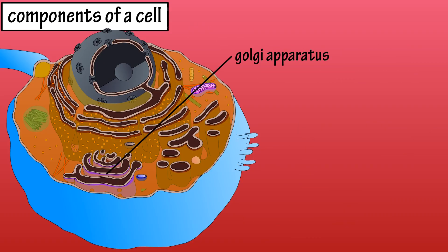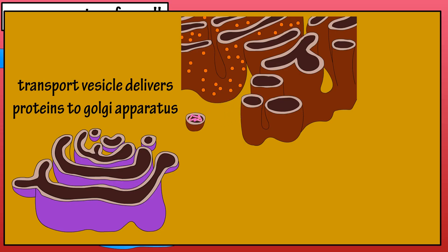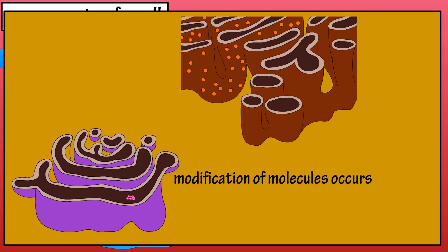The Golgi apparatus is a membranous organelle whose main function is to modify, package, and store proteins. Transport vesicles delivering proteins from the ER fuse with the first cistern of the Golgi apparatus, where they release the proteins, which are modified by enzymes. Modification of the molecules continues as they move through the Golgi apparatus by way of the Golgi vesicles. Some of this modification may include the addition of carbohydrates to form glycoproteins.